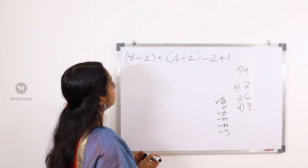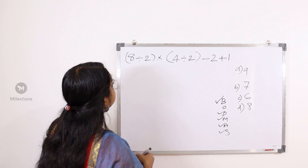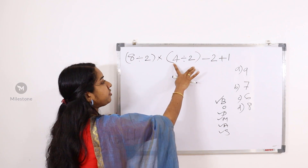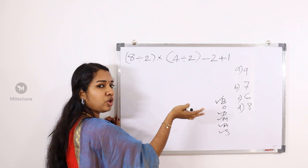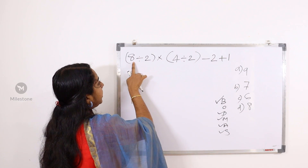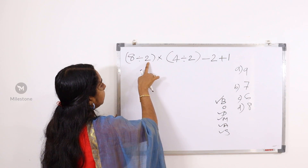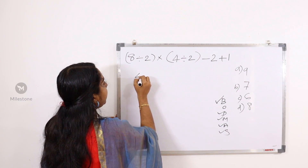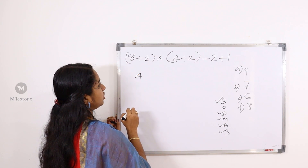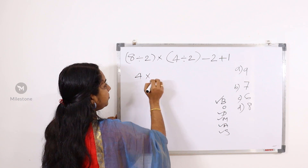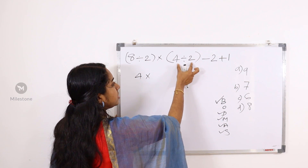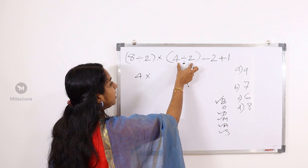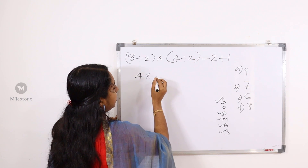How do we apply this? There is a bracket here and there is a bracket here. That will open. 8 by 2, 3 is 4. Then we use that bracket. In this bracket we use 4 by 2, 3 is 2.